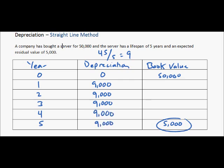And now we just subtract. So 50 minus 9 is 41, 32, 23, and then 14, and then 14 minus 9 is 5. So that's correct. So in the straight line method, this is very simple. This is a simple way to depreciate an asset.